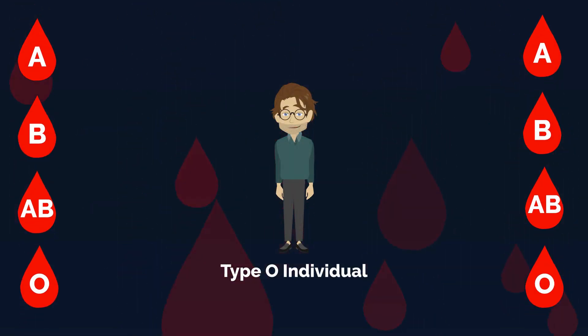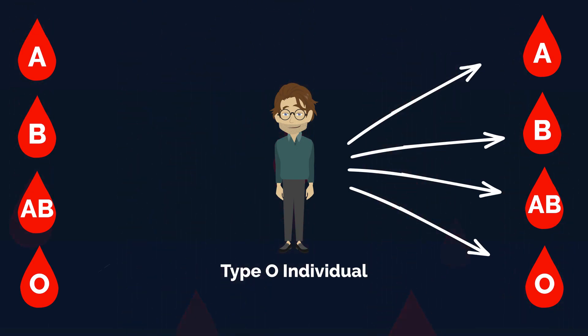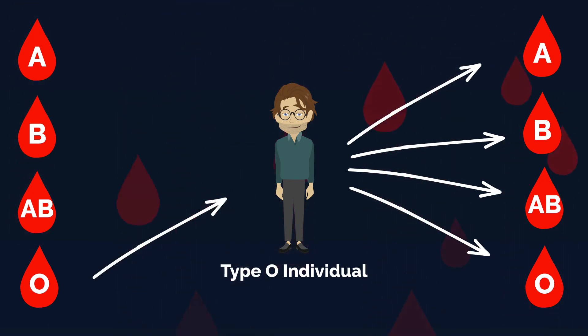Type O. Individuals with type O blood can donate blood to anyone, but can only receive blood from similar type O individuals.